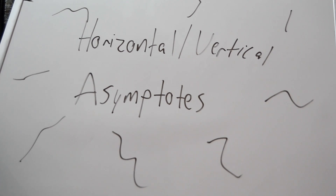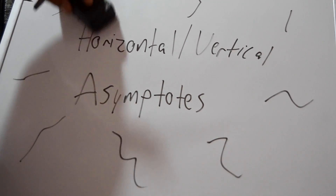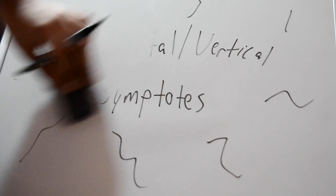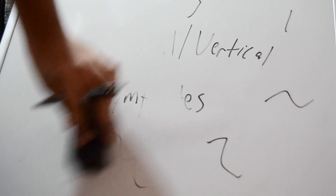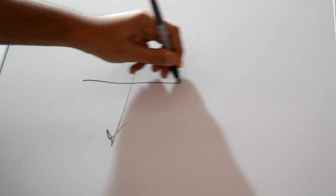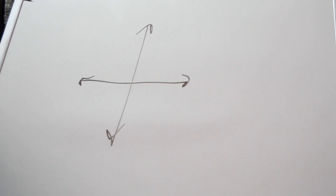What's up guys, Nitty Gritty Maths here, and today we're learning about horizontal and vertical asymptotes. An asymptote is a line that approaches the curve but does not meet it. As you learned from my discontinuity video before this — if you haven't, check it out — we'll be building on those concepts.